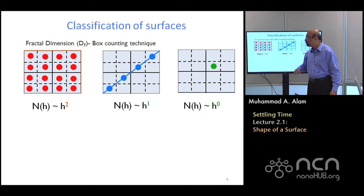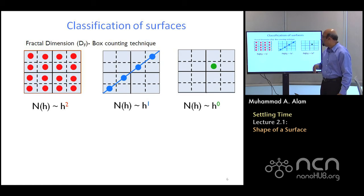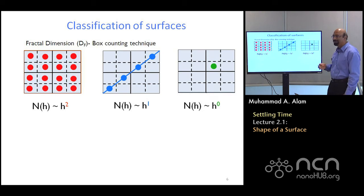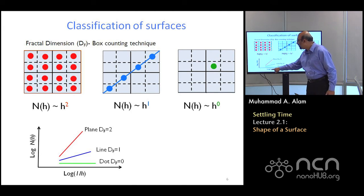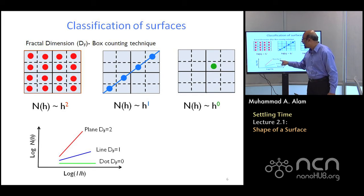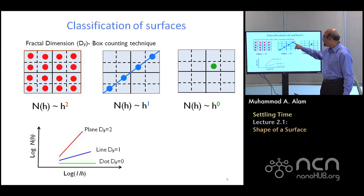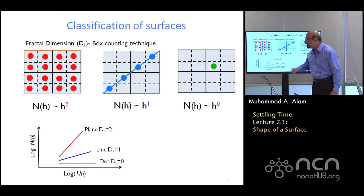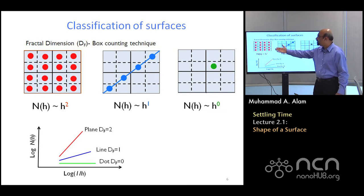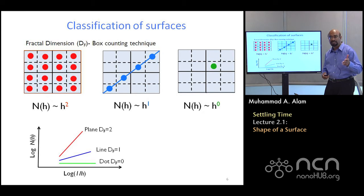As you keep dividing, the number of cells occupied goes as h squared for a surface, linearly with h for a line, and as h to the power zero — which is one — for a dot, because it's always one cell that gets occupied. So if you plot log of n as a function of log of 1/h, you will see that the slope of this line gives you the fractal dimension: two for a surface, one for a line, and zero for a dot.